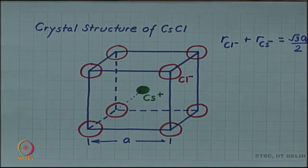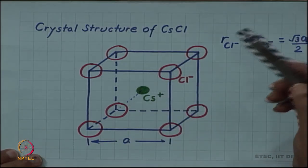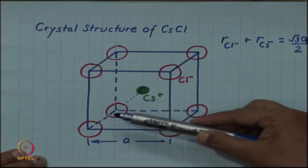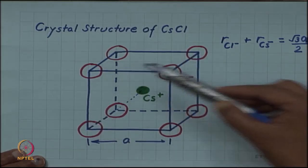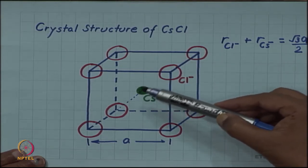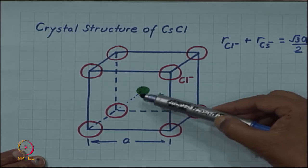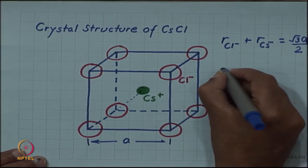If we describe the crystal structure in terms of lattice and motif, the lattice is simple cubic because only the cube corners are equivalent locations. Although there is an atom in the body center, this is not equivalent to the corner atom, so this is not a body-centered cubic lattice.